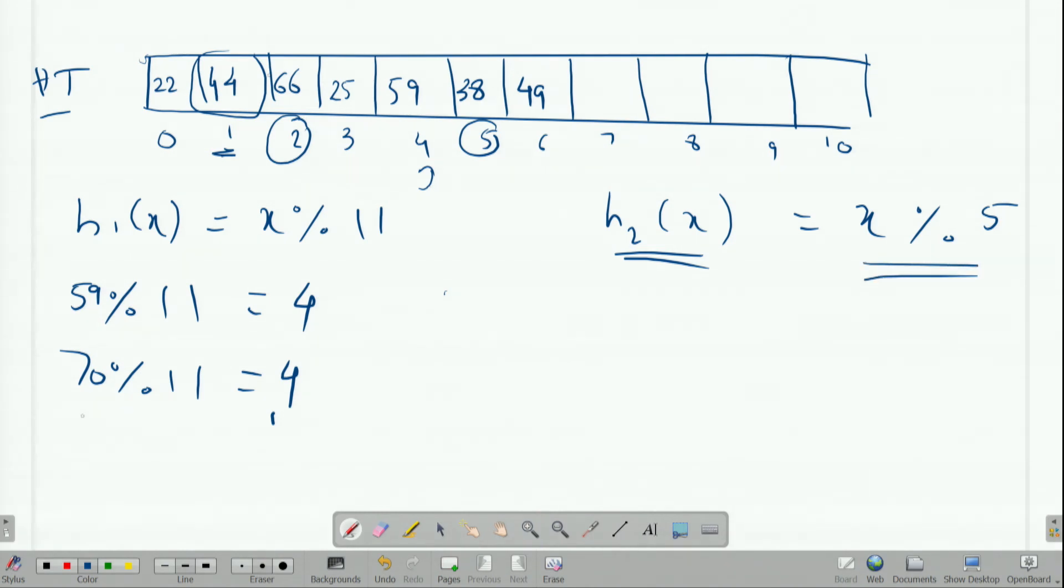We apply the second hash function on 70. 70 mod 5 is 0, so we come to slot 0 to place our element there. However, since there is already an element at 0, we need one more technique of collision resolution. Otherwise, we could have just placed our element at key 0.